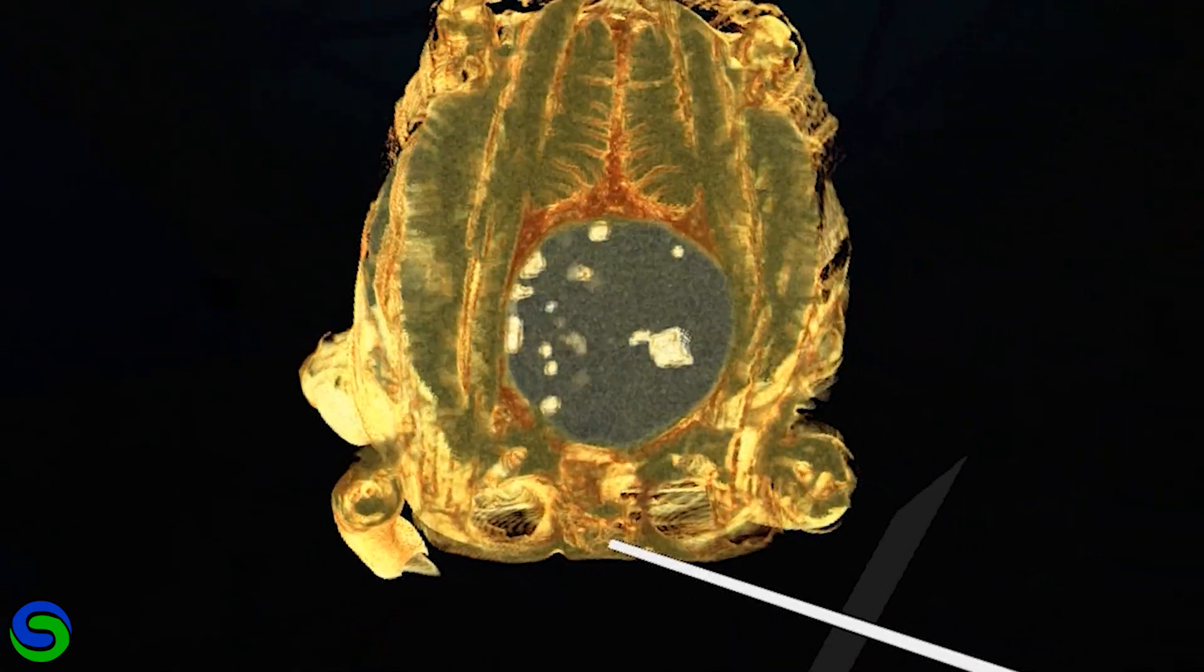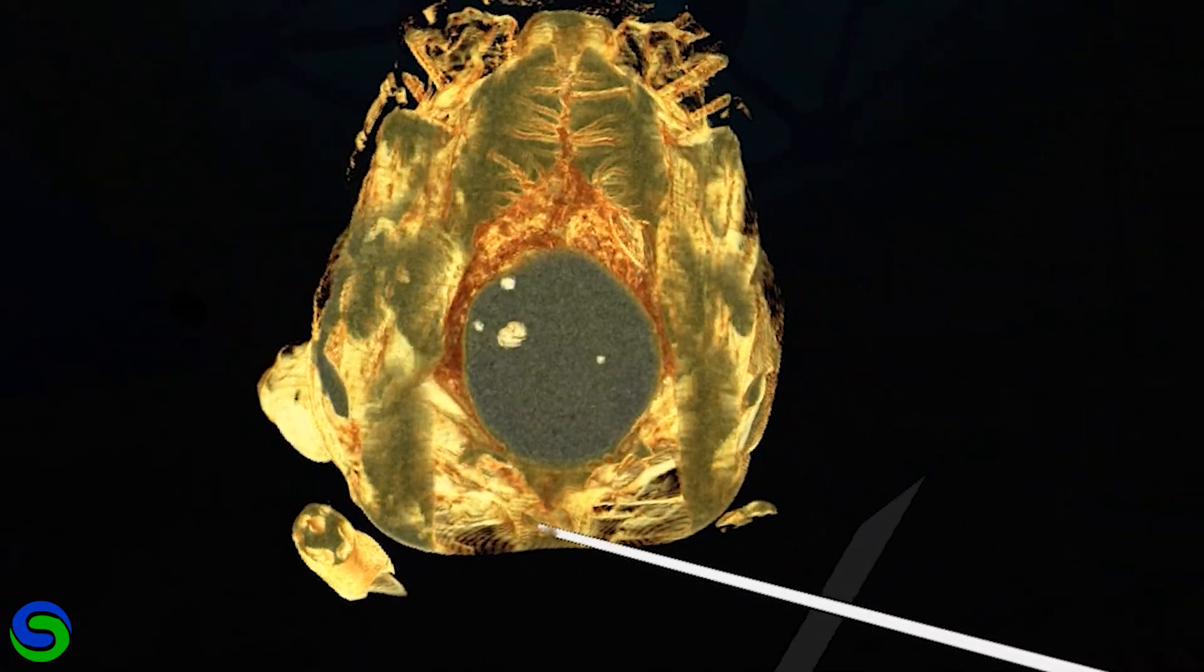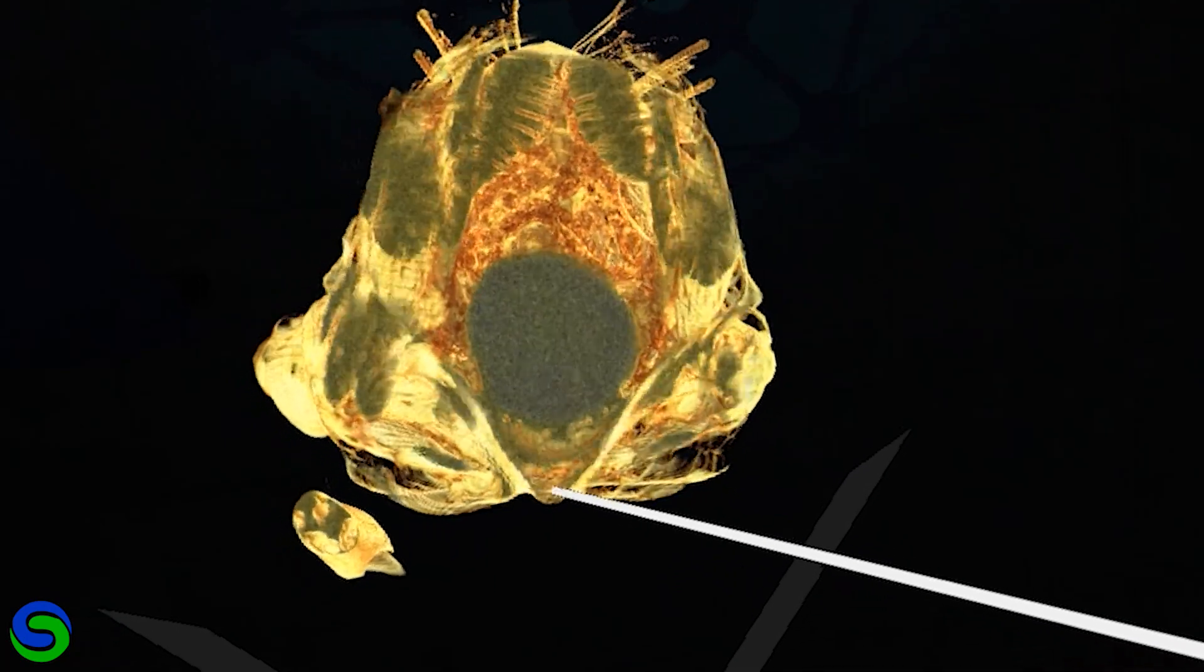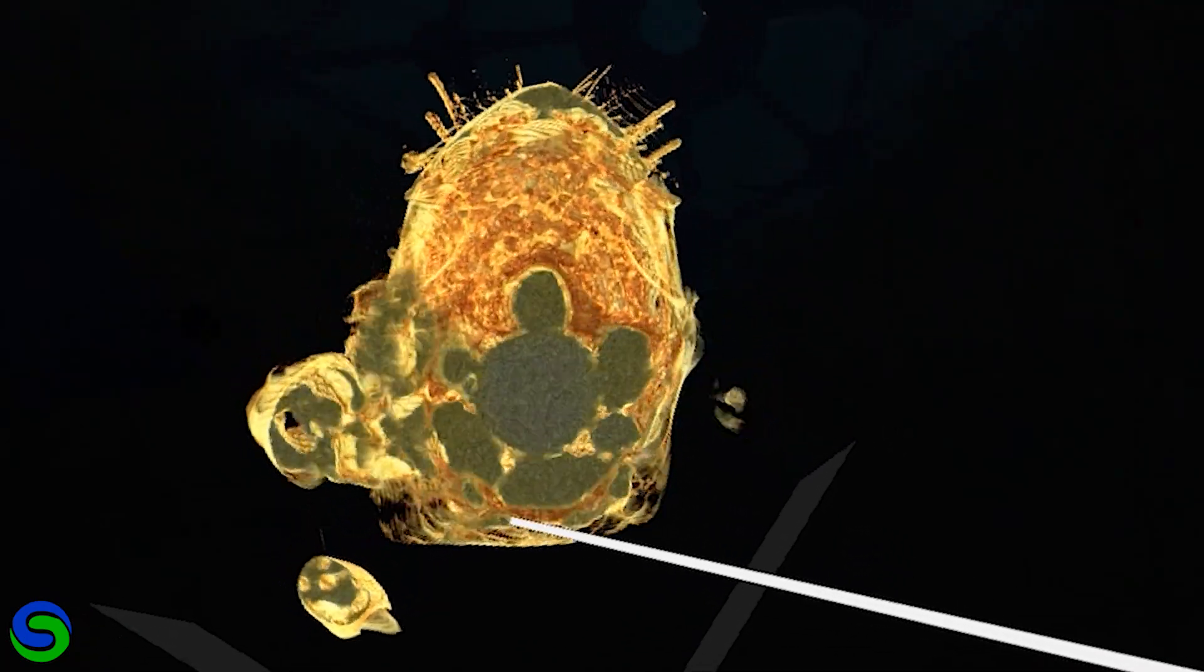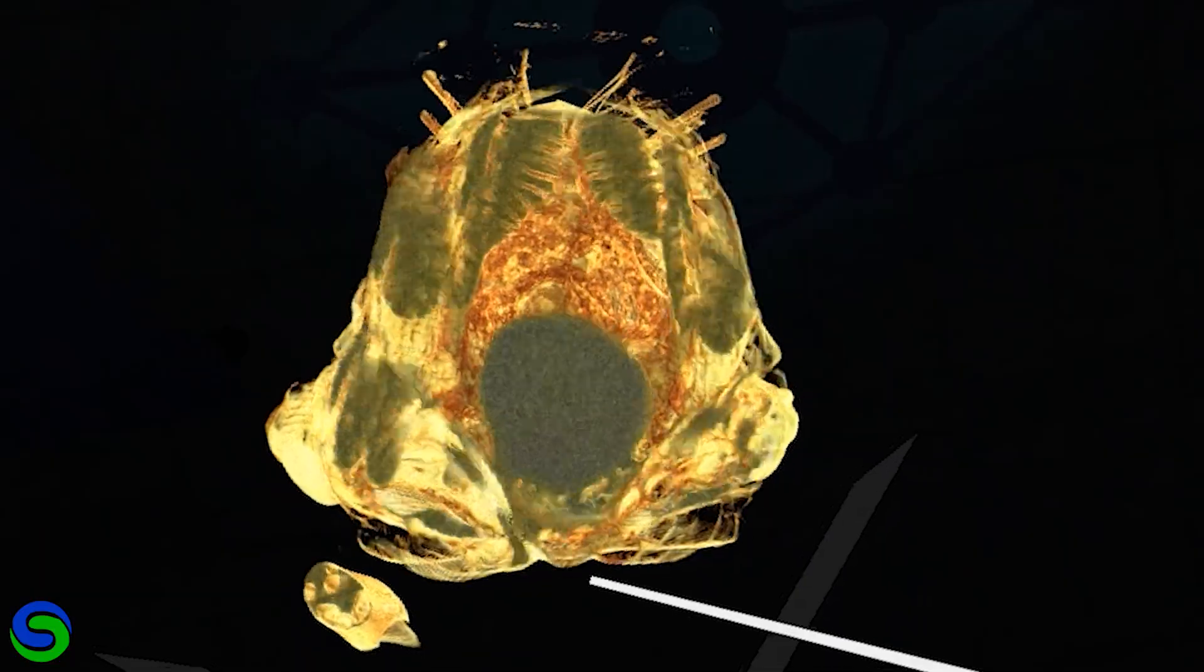Let's take one last look at the cross section of the locust. At the bottom, you can see the area where the nerve cord sits. It's like it sits in a canal that runs along the bottom of the animal.